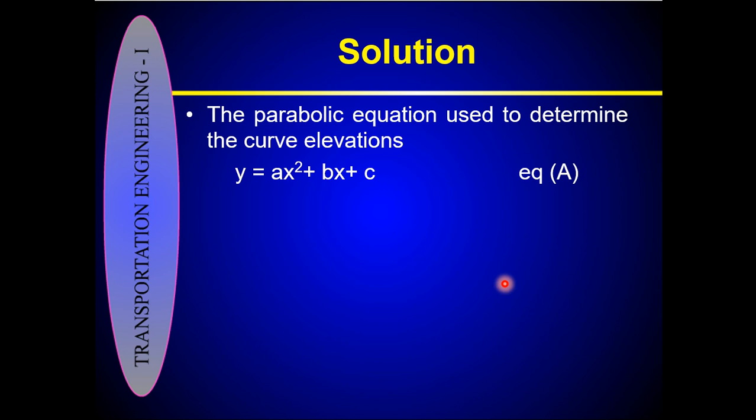You need to know what values of x to use. At the PVC, x = 0. Since the curve length is 700 feet, at the PVT, x = 700 feet. You will calculate elevations by substituting x at suitable intervals — that is, at each station: 0, 100, 200, 300, 400, 500, 600, and 700 feet.